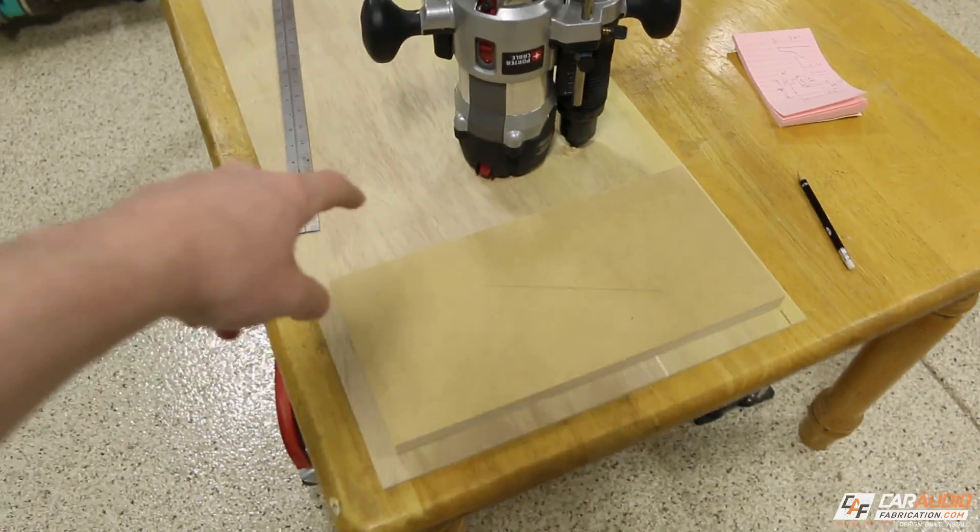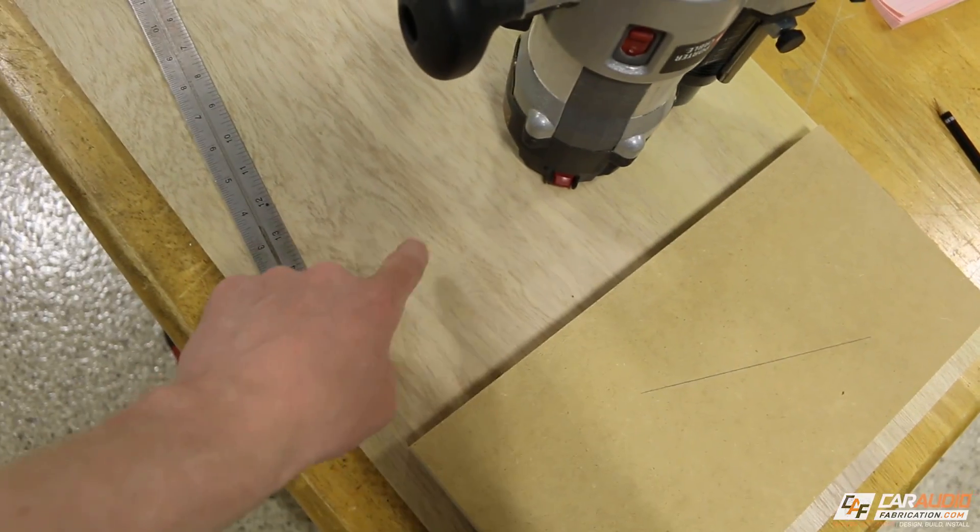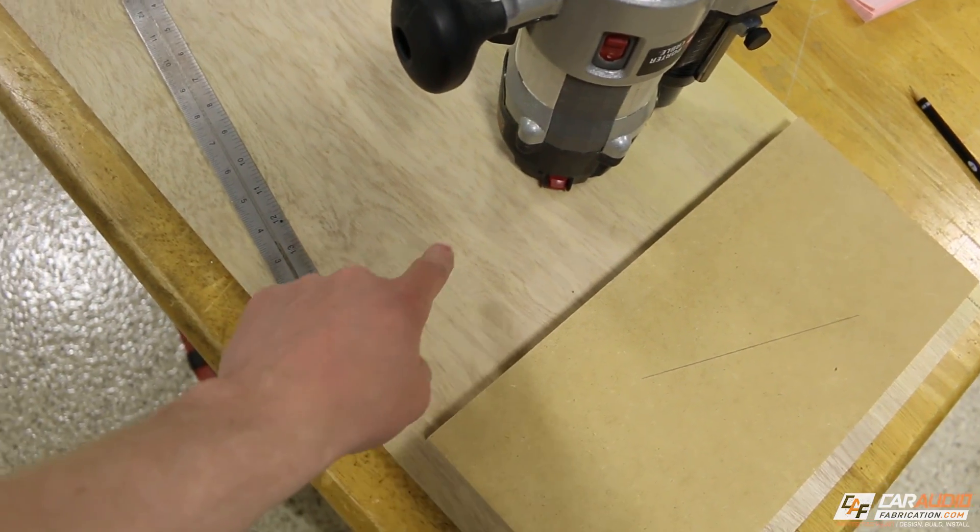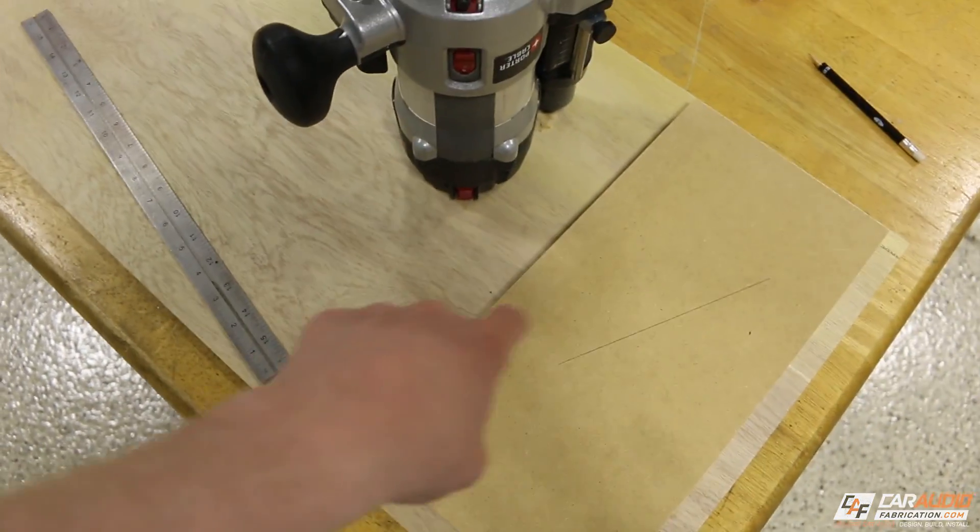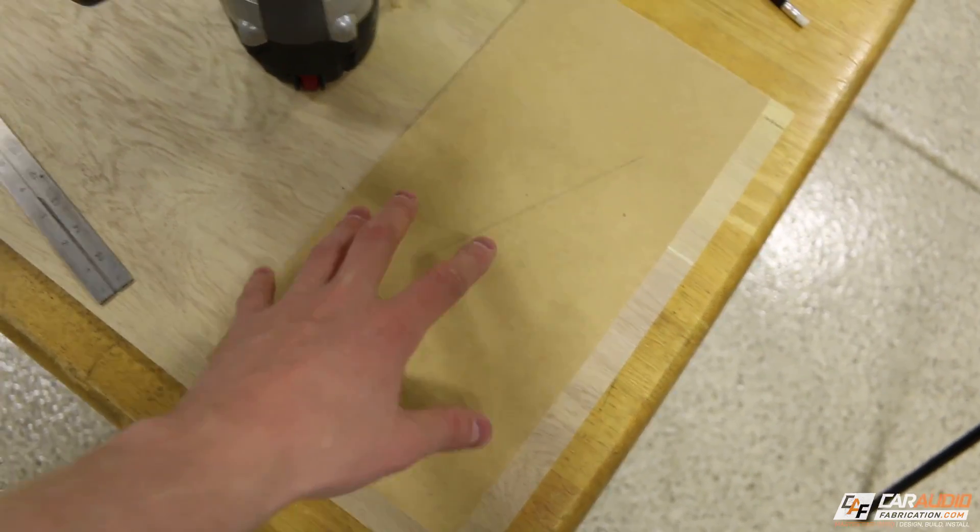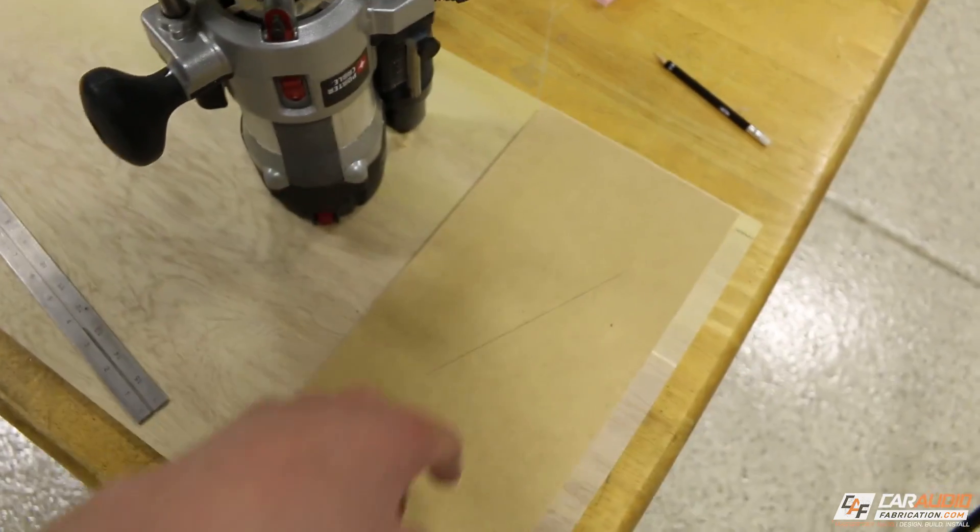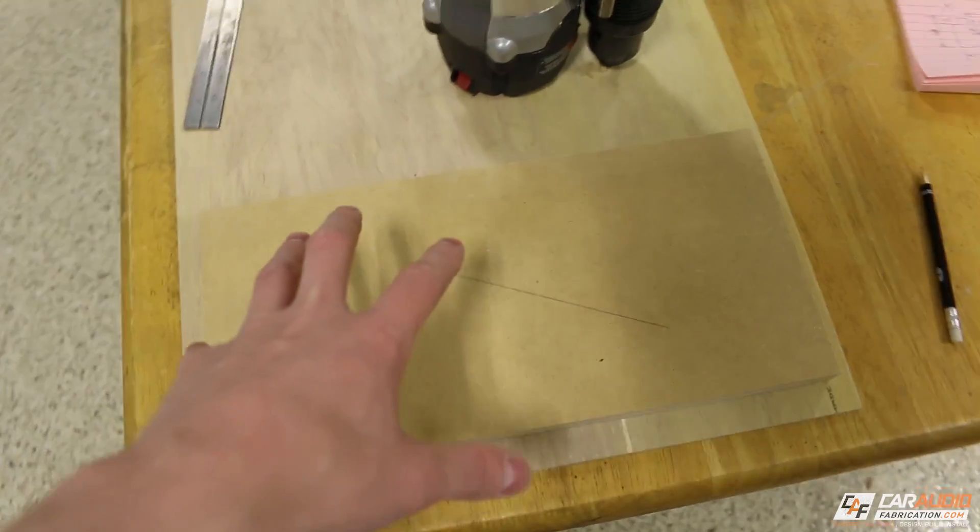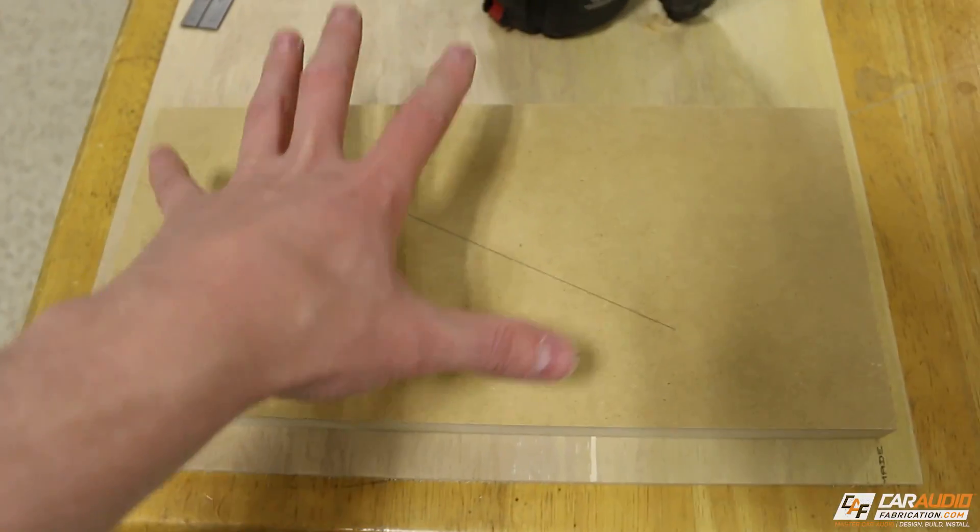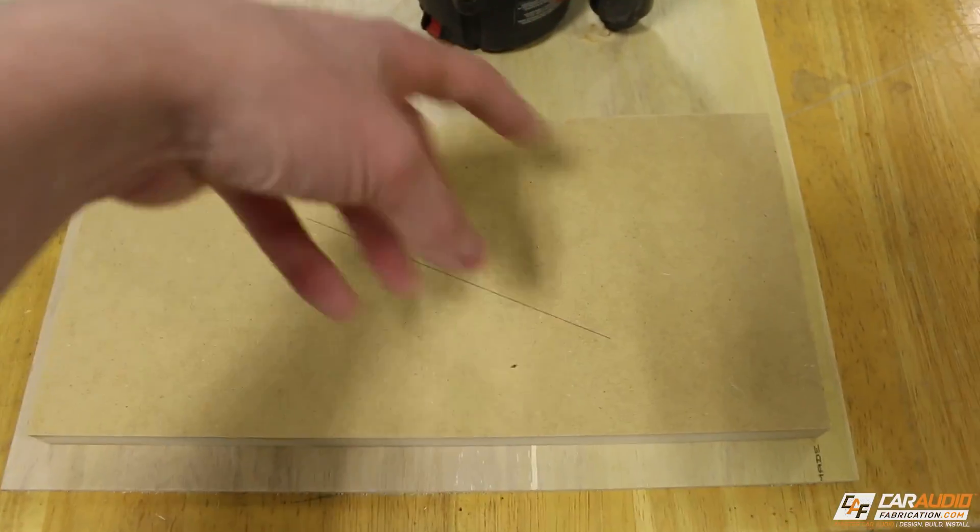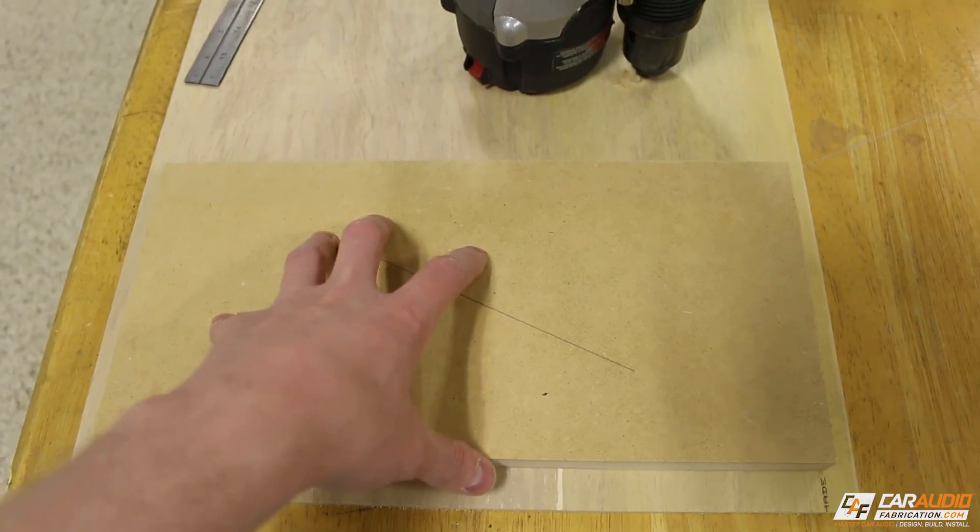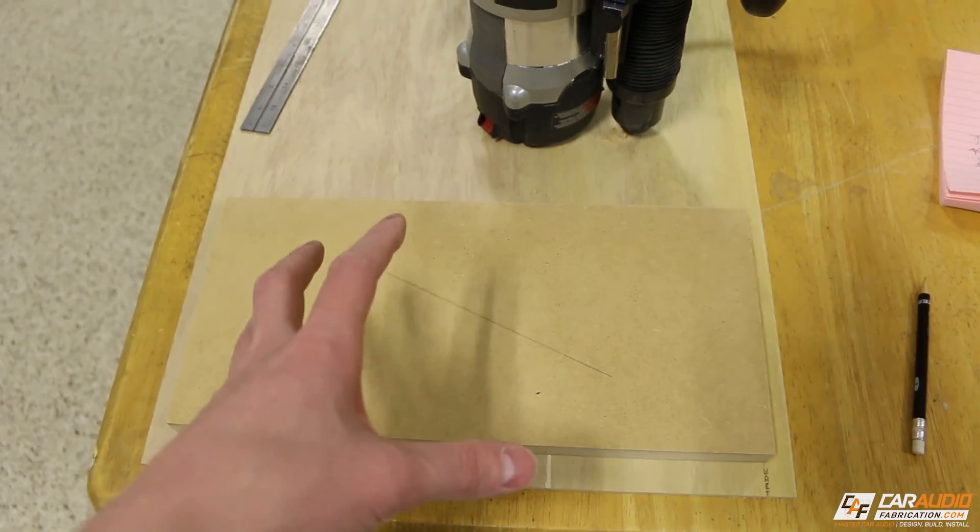All right, so here's my setup. What I've done is I've applied some random wood here. This is going to be my waste board. Basically, I can cut all the way through the MDF that I'm using into this wood without damaging my table.